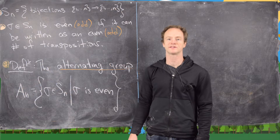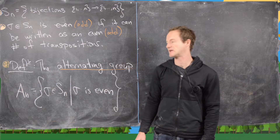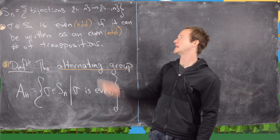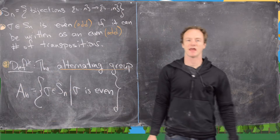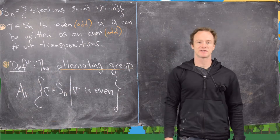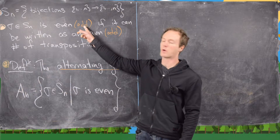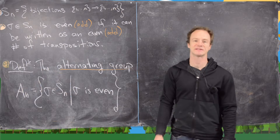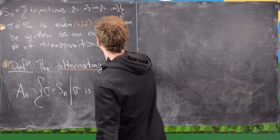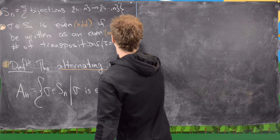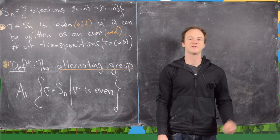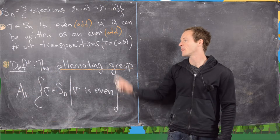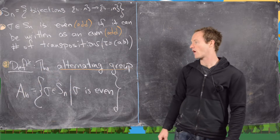In this video we want to look at a really important subgroup of the symmetric group known as the alternating group. The symmetric group Sn is the group of all bijections from {1,...,n} to {1,...,n}. A sigma in Sn is said to be even or odd if it can be written as an even or odd number of transpositions, where a transposition is just a two-cycle. In a previous video we proved that every permutation can be written as a product of transpositions.